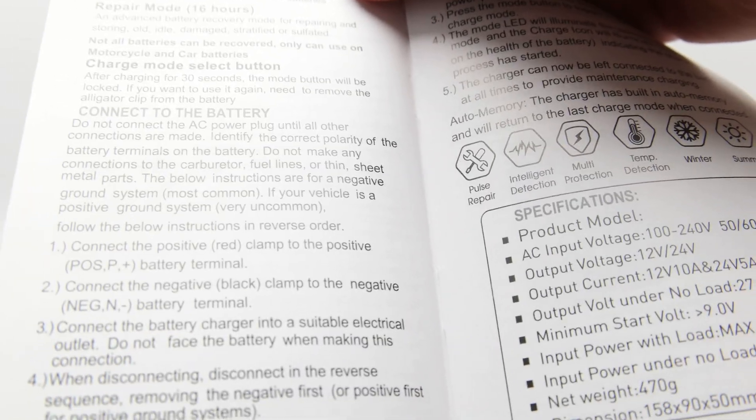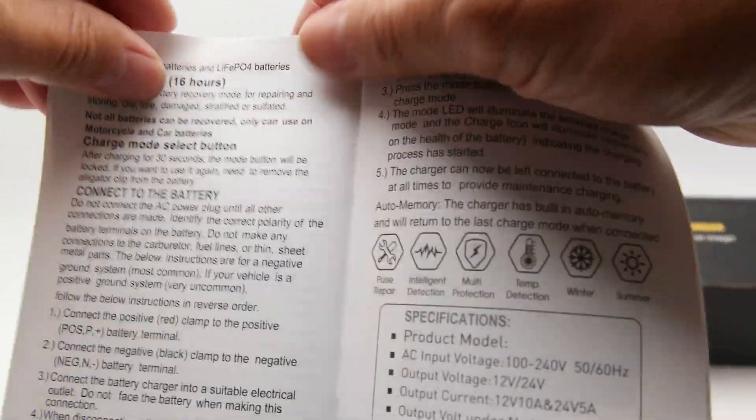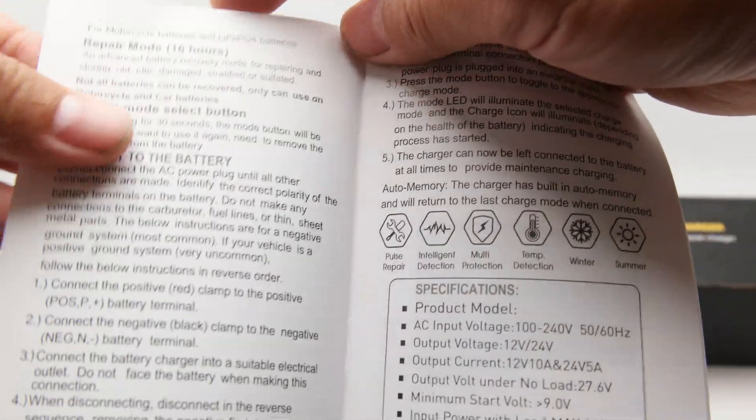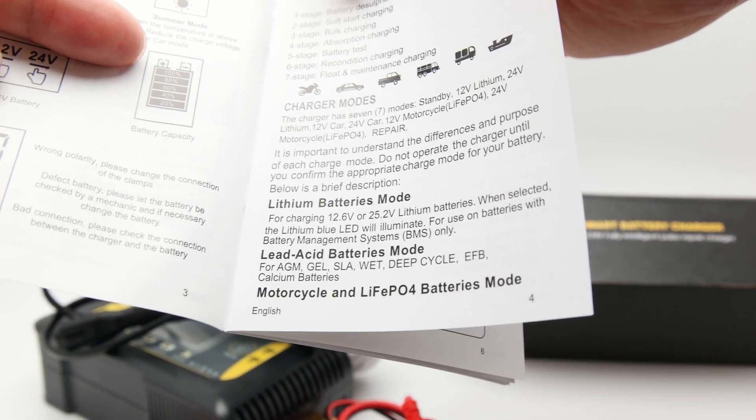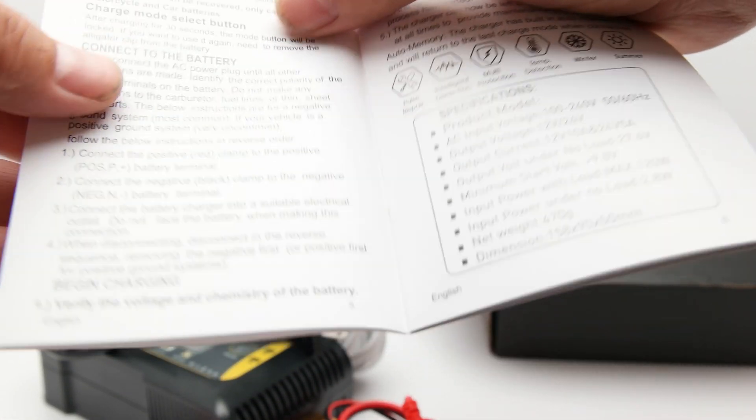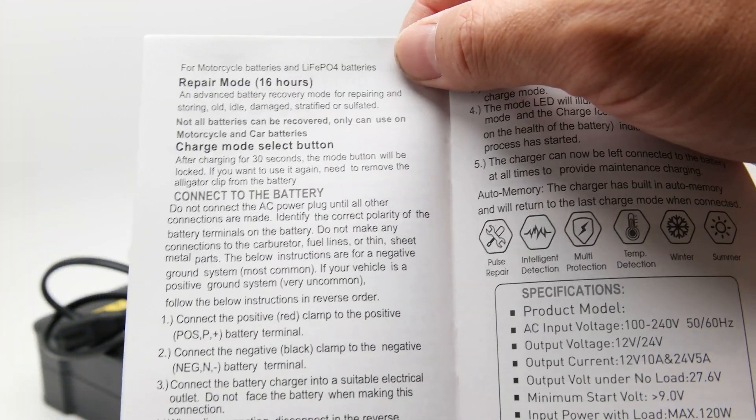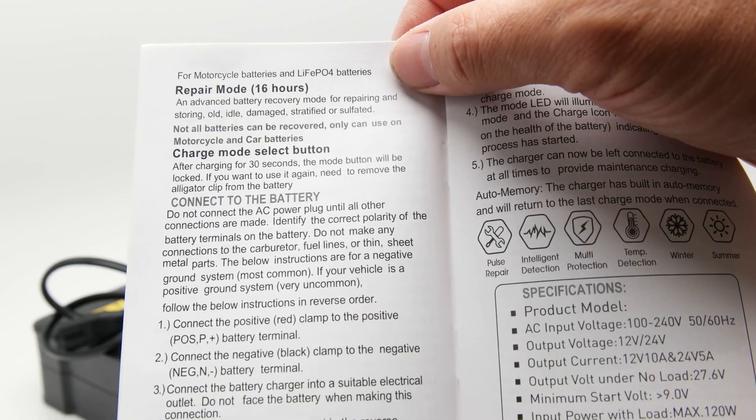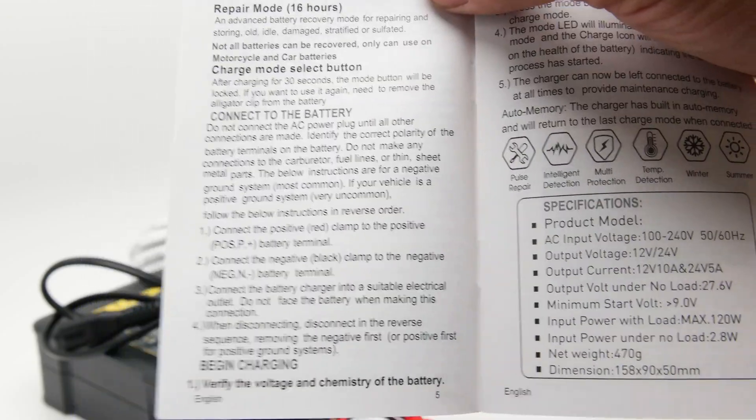Looks like repair mode for motorcycle, let's see, for motorcycle batteries and lithium phosphate batteries, repair mode takes 16 hours. So you got any old batteries that you think you might want to try to repair? Apparently, the whole thing takes 16 hours. Okay, not all batteries can be covered only can use it on motorcycle and car batteries, which is pretty obvious. Basically, lead acid batteries is what this will do.